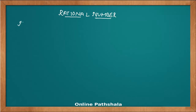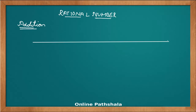To start with, it is addition. Let's take up an example, draw a number line, and try to solve that example on the number line. The example is minus 4 by 7 plus 5 by 7.